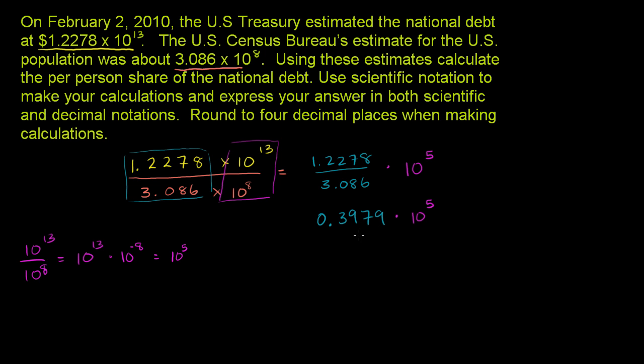Now, once again, you might be tempted to say, hey, this is in scientific notation. I have some number times a power of 10. But notice, this number is not greater than or equal to 1. Remember, this number, if you want to be formal about scientific notation, has to be greater than or equal to 1 or less than 10. So what we can do here is, we can multiply, if we don't want to change the number, we can multiply this number by 10 and divide this number by 10.